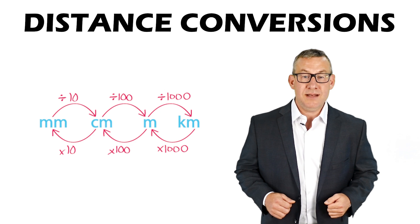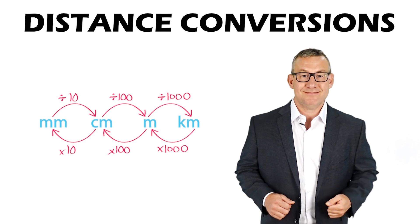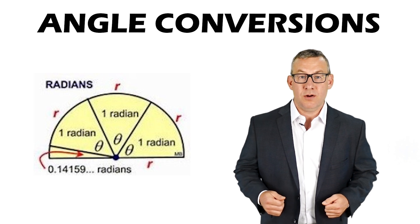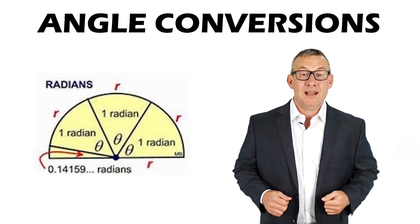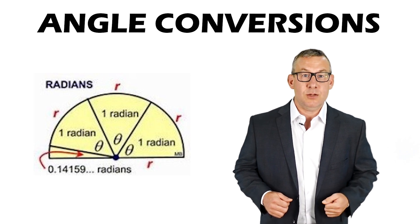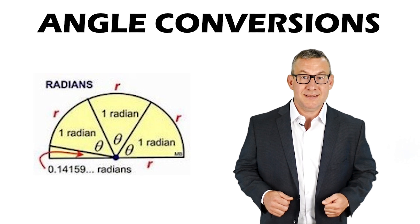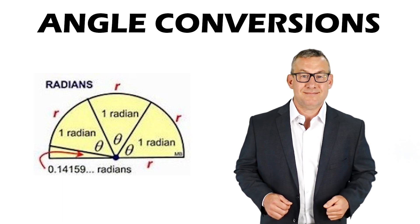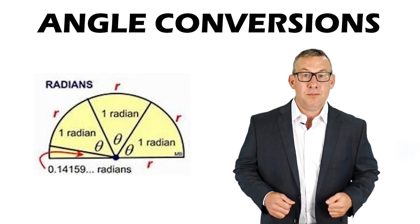One meter equals 3.28 feet. One meter equals 10 decimeters, 100 centimeters, or 1,000 millimeters. Angle measurements are normally recorded in degrees, but sometimes converted to radian measure for analysis. One radian equals 57.3 degrees. 180 degrees equals 3.14 radians. 360 degrees equals 6.2 radians. Pi equals 3.14 radians, or 180 degrees.